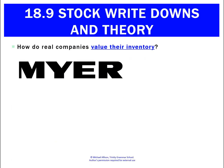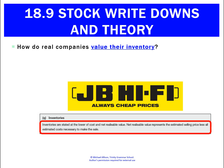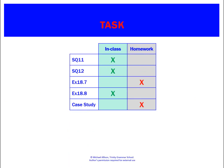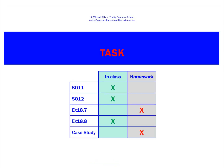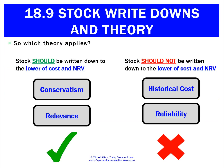How do real companies do this? They apply the same thing. This is from Myer's annual report: at the end of the reporting period, all inventories are valued at the lower of cost and net realizable value. JB Hi-Fi does the same, and Bonds does the same. In Myer's case, this could be swimwear during winter, coats during summer, or last year's iPhone now that a new one has come out. This is a real-world thing, and therefore we're always going to apply conservatism and relevance and set aside historical cost and reliability.